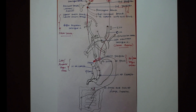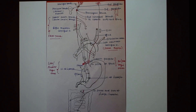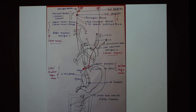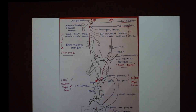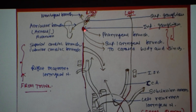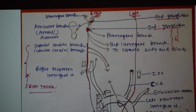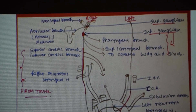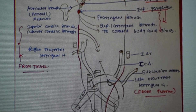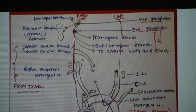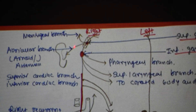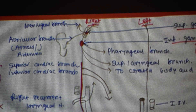Now we will discuss the branches in the neck region. The vagus nerve has two ganglia: superior and inferior. The inferior ganglion is larger in size and is located near the floor of the jugular foramen. From the inferior ganglion arise the meningeal branch and the auricular branch. The meningeal branch supplies the dura mater of the posterior cranial fossa — it is a recurrent branch. The auricular branch supplies part of the pinna, mainly the concha.